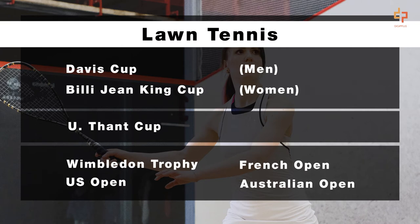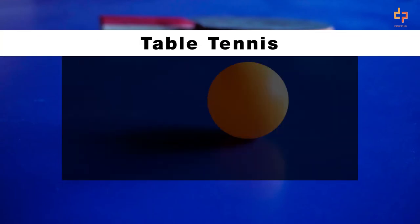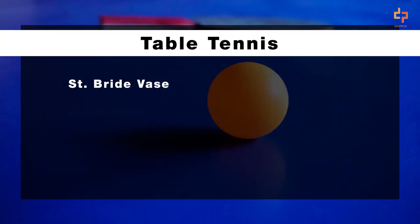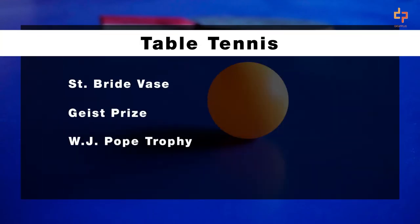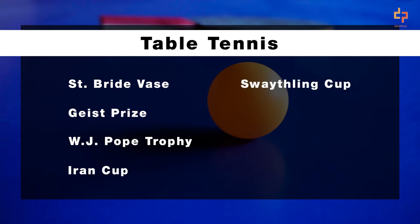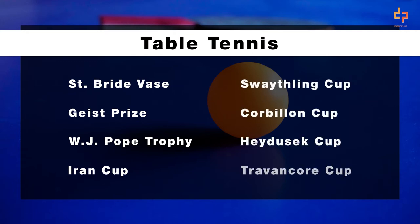The Australian Open is usually the first Grand Slam that takes place in any particular year. For Table Tennis, you have the St. Bride Vase, the Deist Prize, WJ Pope Trophy, and the Iran Cup. You might have also come across names such as Swaythling Cup, Corbillon Cup, Heydusek Cup, and the Travancore Cup — all associated with Table Tennis.